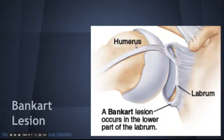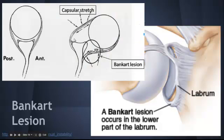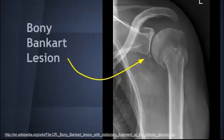The Bankart lesion is a tear of the labrum of the glenohumeral joint with no bony disruption — it's just the labrum that's torn. This is present in 90% of dislocations. You can see the capsule is stretched and the anterior labrum is torn. Importantly, you won't be able to see a Bankart lesion on X-ray.